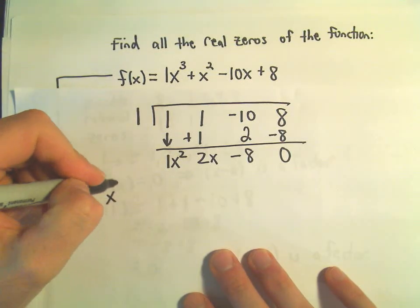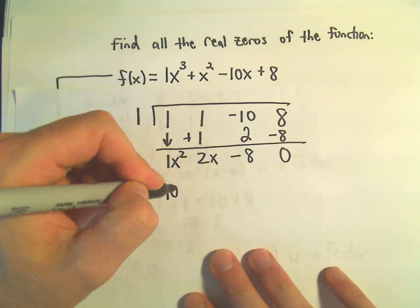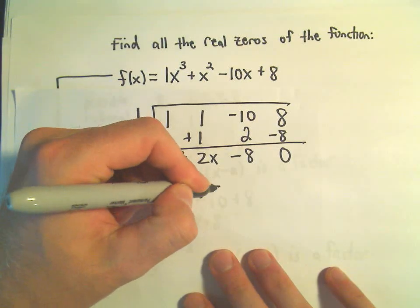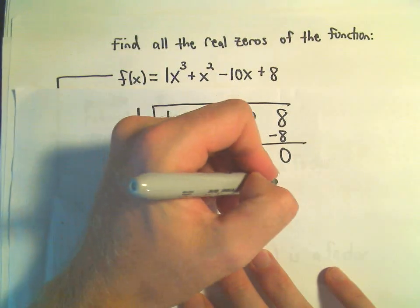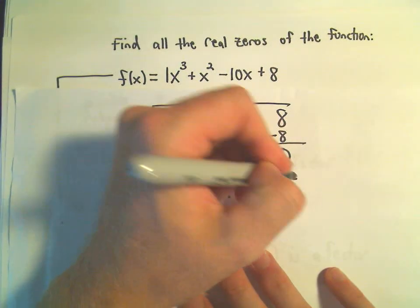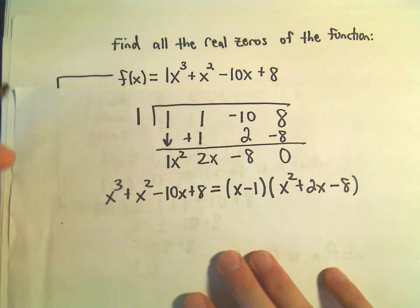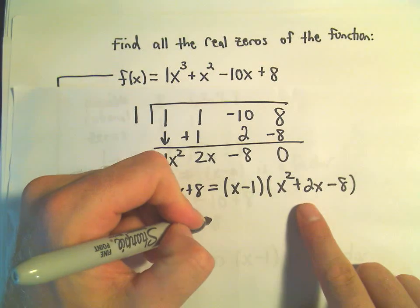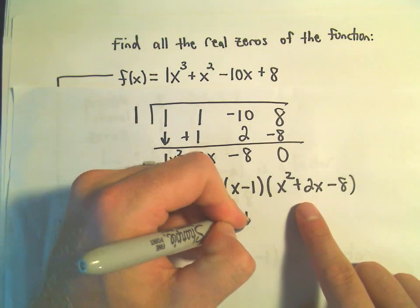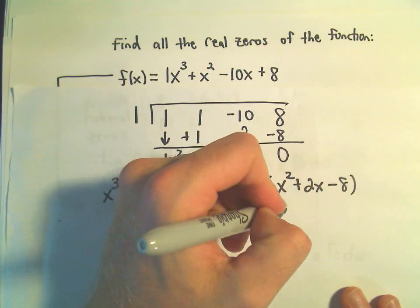So what that means is x cubed plus x squared minus 10x plus 8, we can factor that as x minus 1 times x squared plus 2x minus 8. Okay, and now we're in business because I think this last factor is a nice quadratic factor, and I think that's going to factor without too much trouble.